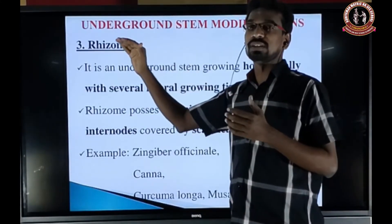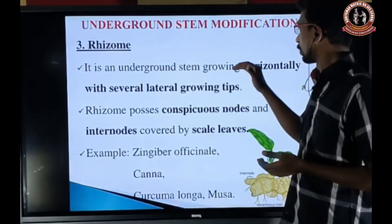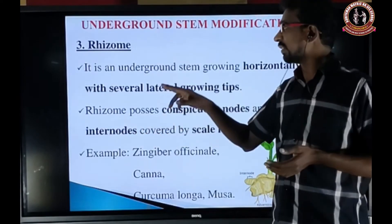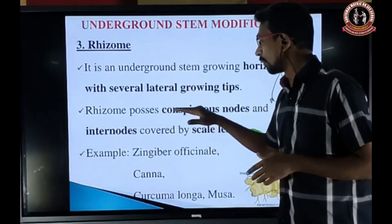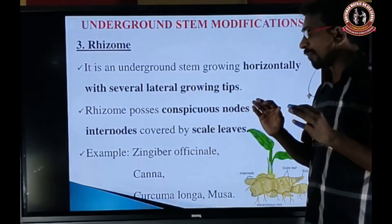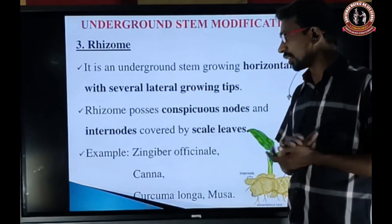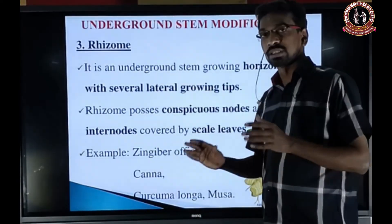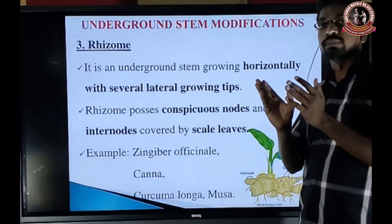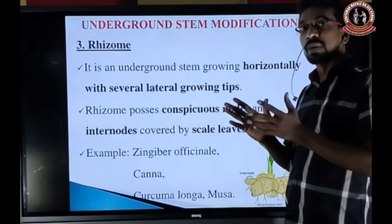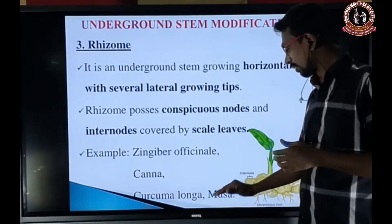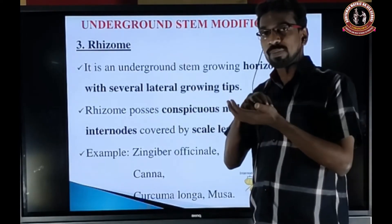The third type is rhizome. It is an underground stem growing horizontally with several lateral growing tips. The rhizome possesses nodes, internodes, and is covered by scale leaves. Examples include Zingiber officinale (ginger), Canna (called Kalvali), Curcuma longa (turmeric — manjal), and Musa (banana). They are perenniating by means of rhizome.